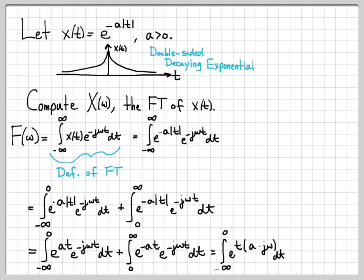We can use the property of exponentials: instead of a product of two exponentials, we write it as e raised to the sum of their arguments. We do that for both integrals. So now we just have two integrals to work: the integral from minus infinity to 0 of an exponential, and the integral from 0 to infinity of an exponential.